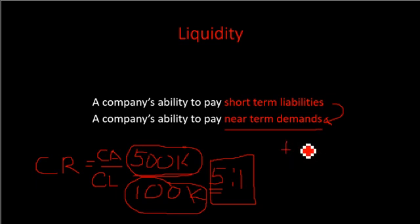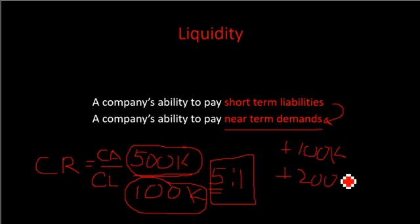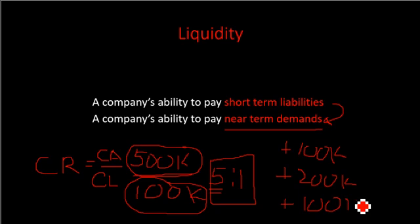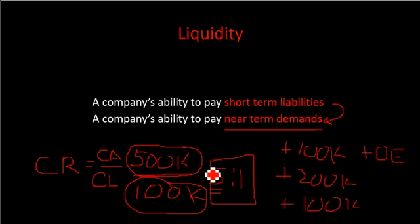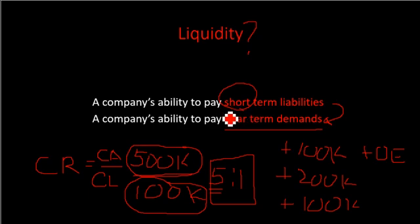If three months from now you're going to pay utilities amounting to 100,000, salaries amounting to 200,000, and other operating expenses amounting to 100,000 — adding those to your current liabilities of 100,000 gives a total of 500,000. Your 500,000 current assets may not be enough to pay for all of this. That's why when we talk about liquidity, we focus on the ability to pay near-term demands, not just short-term liabilities.